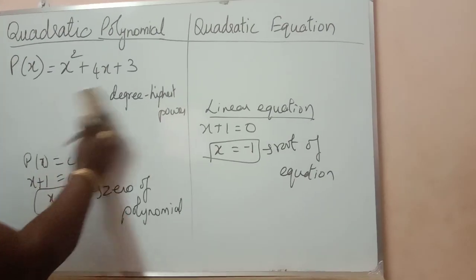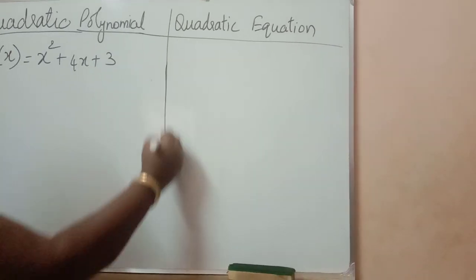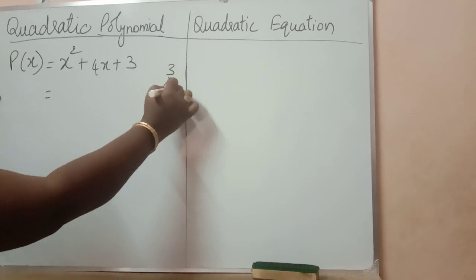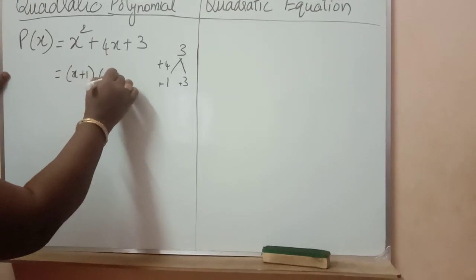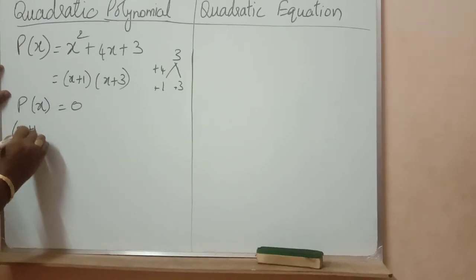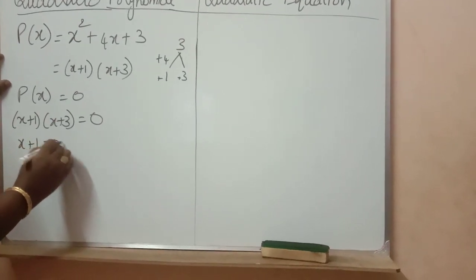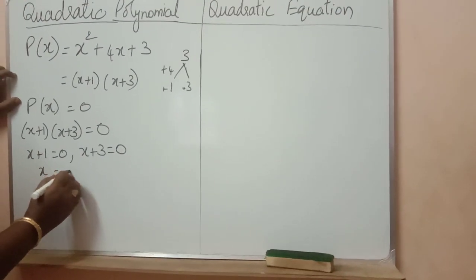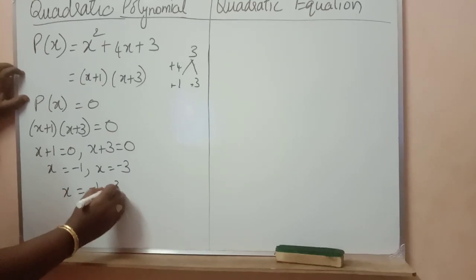Now we are going to study about quadratic equations. We know how to factorize. For x squared plus 4x plus 3, we need plus 4: 1 and 3. So the factors are x plus 1 and x plus 3. Equate P of x equal to 0, so x plus 1 into x plus 3 is equal to 0. Either the first bracket equals 0 or the second bracket equals 0. So x is equal to minus 1 or x is equal to minus 3.